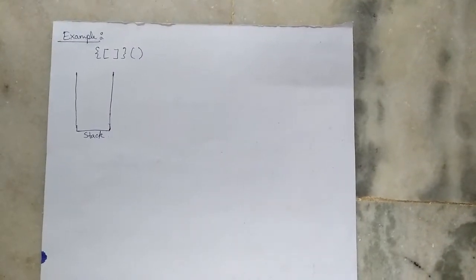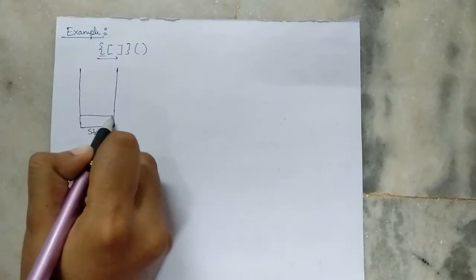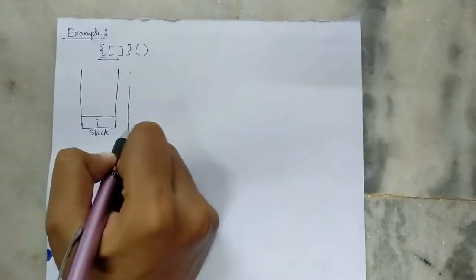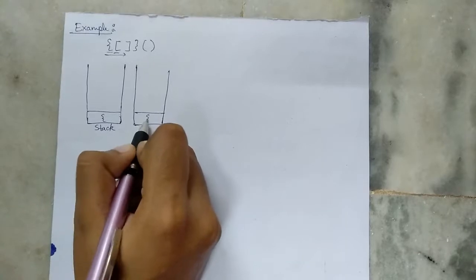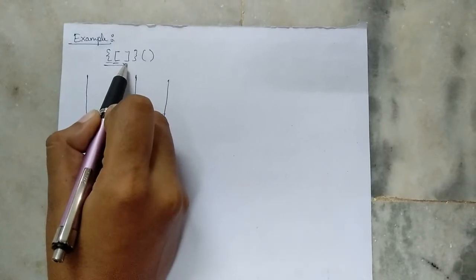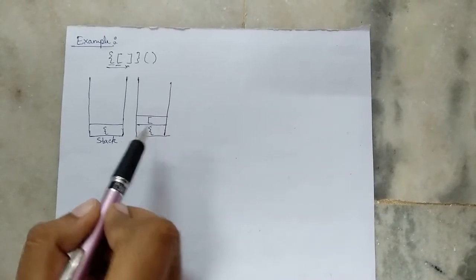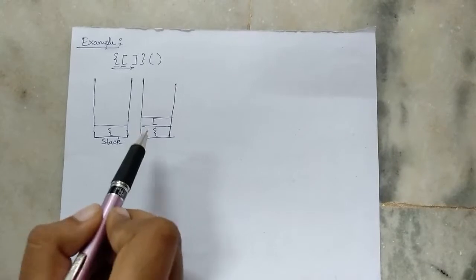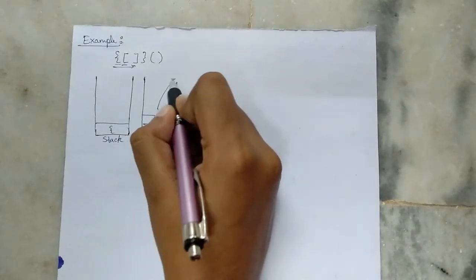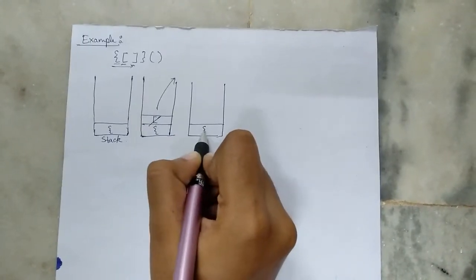Let's go through a simple example and check whether the given expression has balanced parenthesis or not. We start with an empty stack and traverse the expression from left to right. First we encounter an opening curly brace, so we push it onto the stack. Next we find an opening square bracket and push it onto the stack as well. Then we encounter a closing square bracket. The stack is not empty and it has a matching pair, so we pop the square bracket out. Now only the opening curly brace remains in the stack.